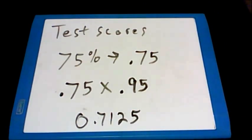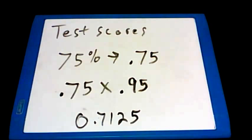The next step will be to convert both the test scores amount and the amount that the test scores were worth from percentages over to decimals. From the question, we know that the test scores are worth 75% of John's grade. So when we convert 75% to a decimal, we need to get 0.75.